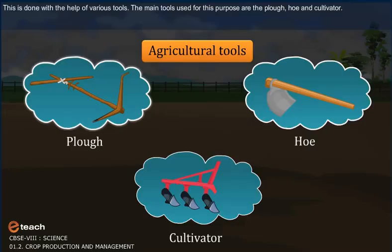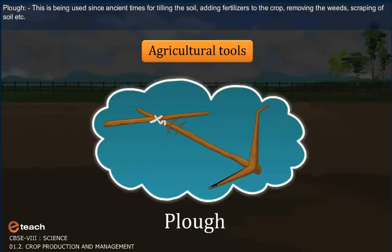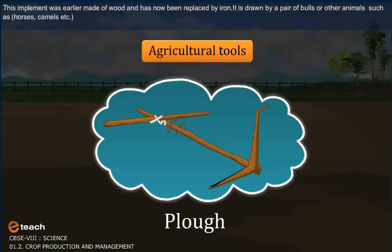Plough. This has been used since ancient times for tilling the soil, adding fertilizers to the crop, removing the weeds, scraping of soil, etc. This implement, earlier made of wood, has now been replaced by iron. It is drawn by a pair of bulls or other animals such as horses, camels, etc.